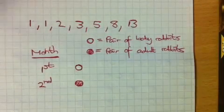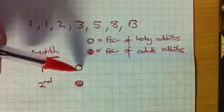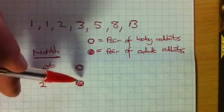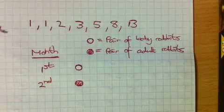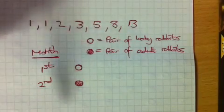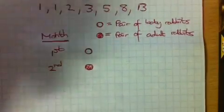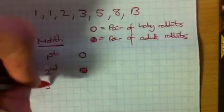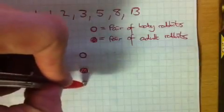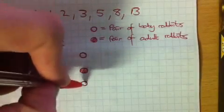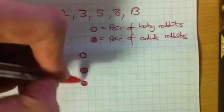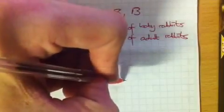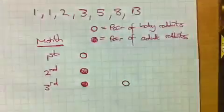Fibonacci said it takes one month for a pair of baby rabbits to become adult rabbits. And he also said every pair of adult rabbits each month would have one pair of baby rabbits — that's how the population would grow. So in the third month, we'd have this pair of adult rabbits still going, and because they were adult rabbits in the second month, they'd also have had a pair of baby rabbits as well.